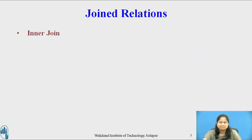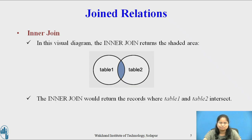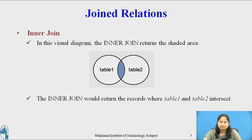Consider inner join. In this visual diagram, the inner join returns the shaded area — the records where table 1 and table 2 intersect. Normal joins are called inner joins in SQL. The keyword inner is however optional. The default join type is the inner join.